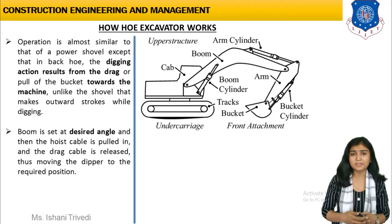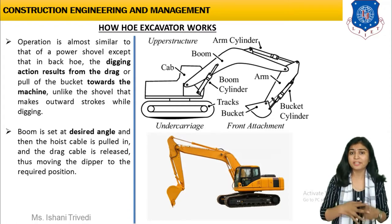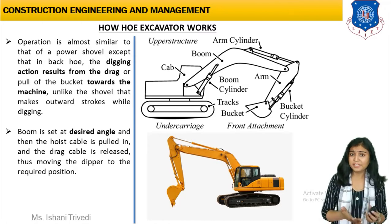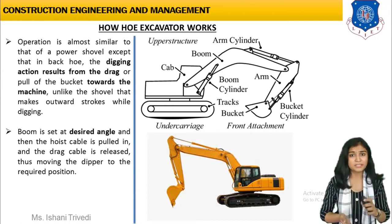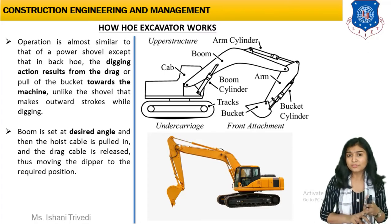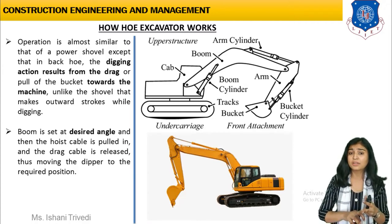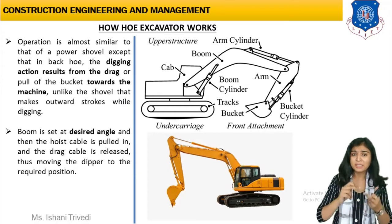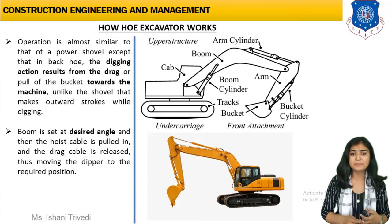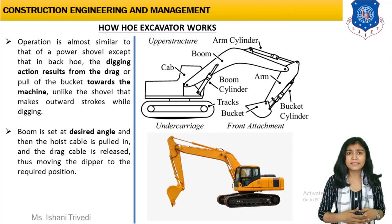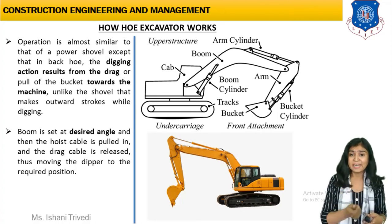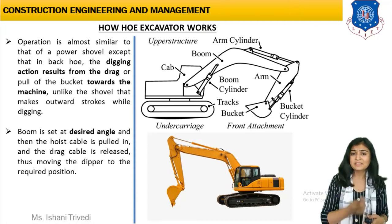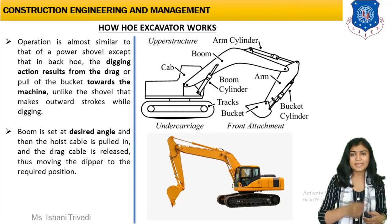Now how does it work? Like the power shovel, we have a cross-sectional sketch or diagram in which all the parts are shown. There is not much of a major difference between these two. The parts like the operating cabin, the mounting at the bottom, the boom, and the arm cylinder are kind of the same, but there is no dipper stick here because the bucket is not in outward stroke position. The bucket is attached to the hydraulic cylinder and performs work towards the operating cabin. Here you can see a crawler mounted hoe excavator.